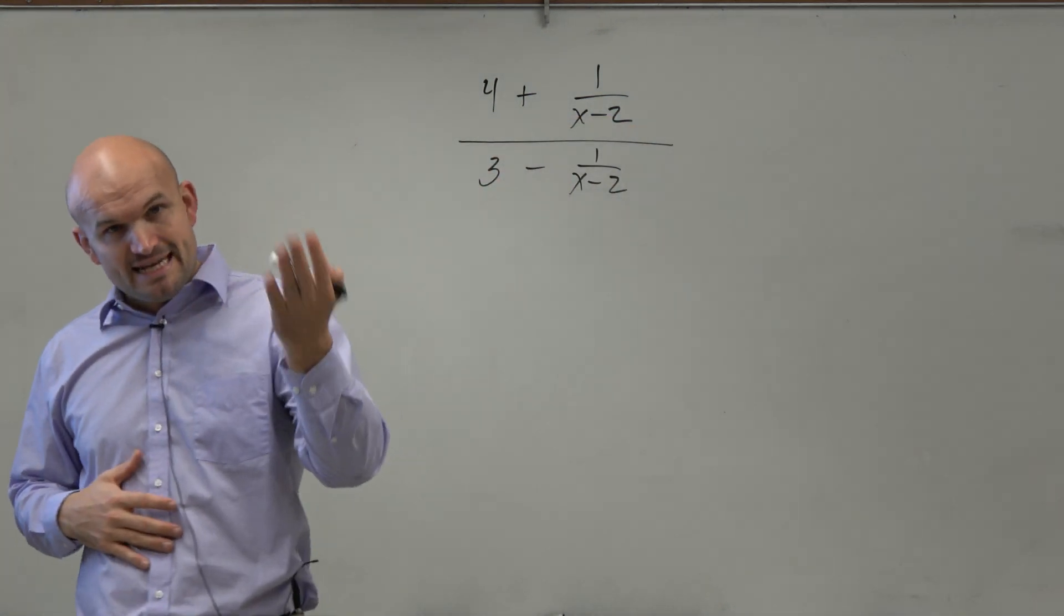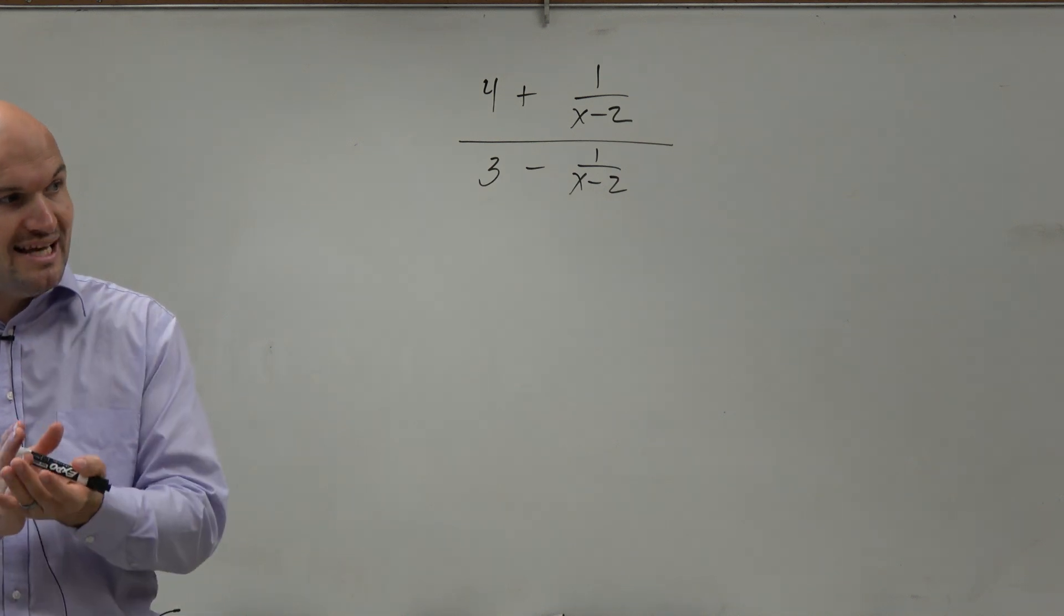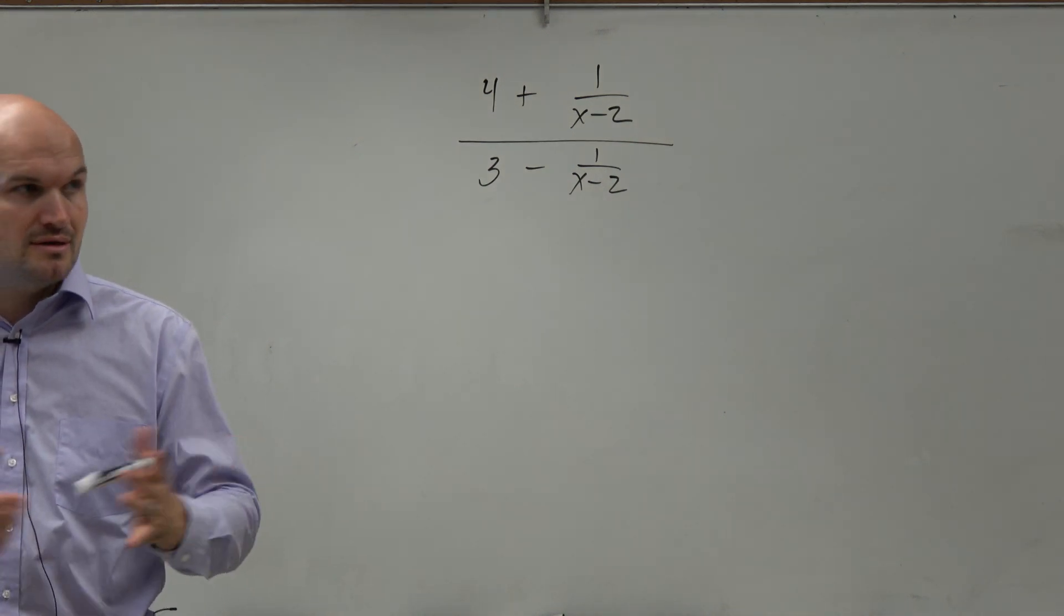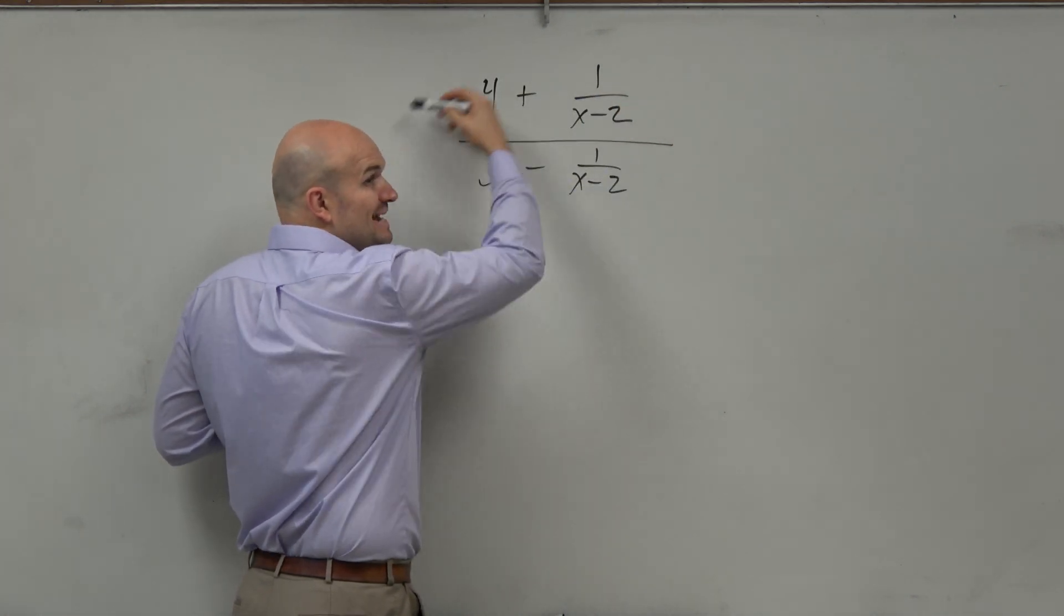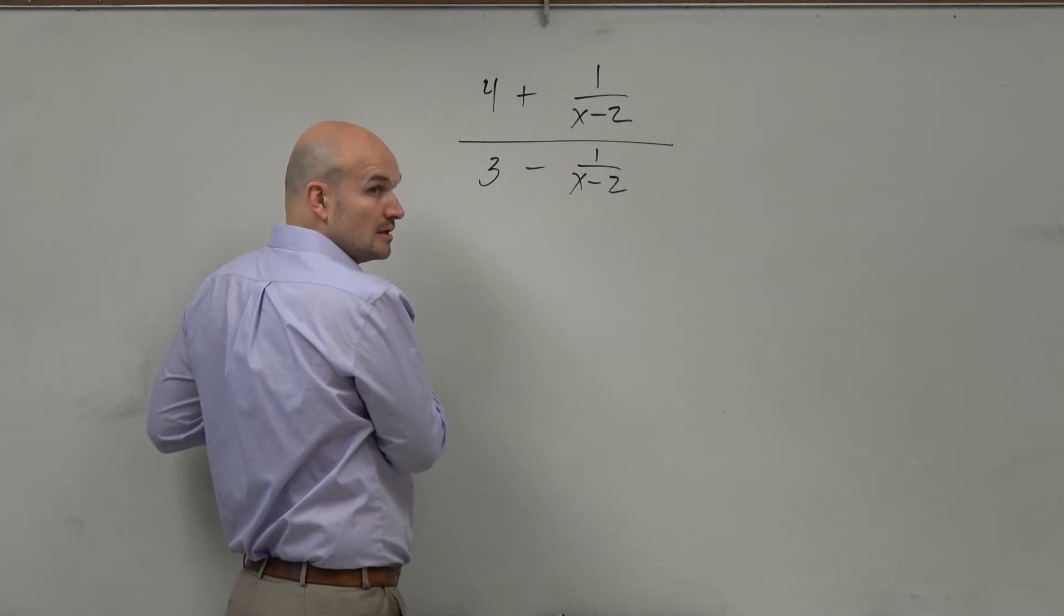So if we can identify the LCD, then we can get rid of the fractions. So we have one fraction, two fractions, and then one big whole fraction. Agreed?